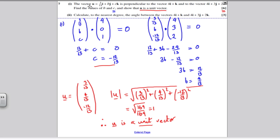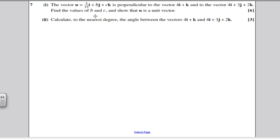So next part, I'm going to do the next part. Calculate to the nearest degree, be careful to read the question. They don't want 3 significant figures necessarily here, the nearest degree. The angle between the following vectors.